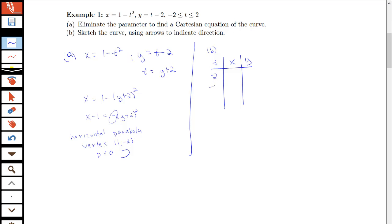I can plug in -2, -1, 0, 1, and 2, and find out what my corresponding x and y values are. When t is -2, we will get x is -3 and y is -4. When t is -1, we'll have x is 0, y is -3. t is 0, we'll get (1, -2). t is 1 gives (0, -1). And when t is 2, we get (-3, 0).